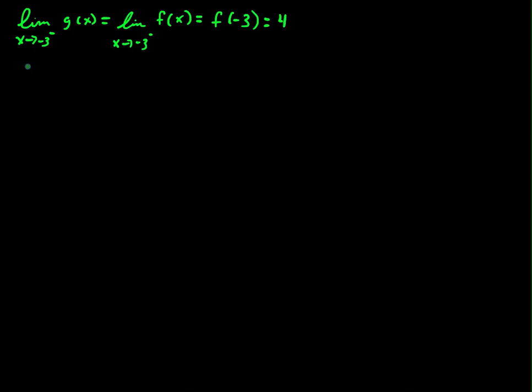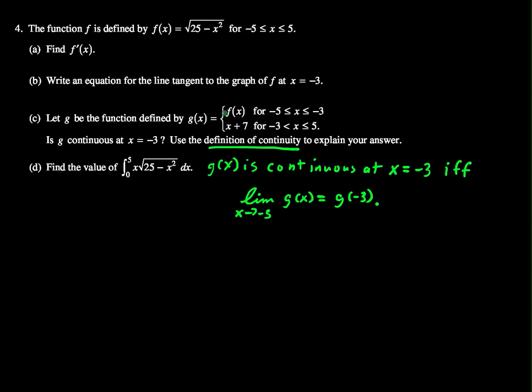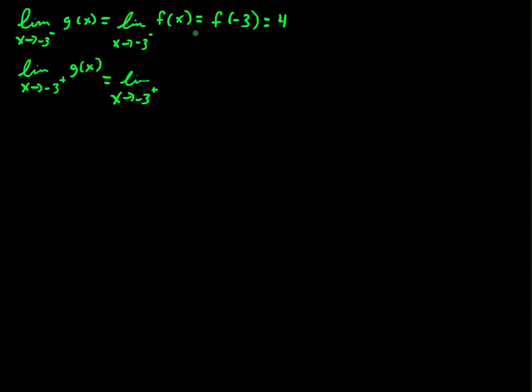We'll also look at the right-hand limit. So the limit as x goes to negative 3 from the right of g of x is equal to the limit as x goes to negative 3 from the right of x plus 7. And this is continuous, so from the right that limit will be negative 3 plus 7 equals 4.